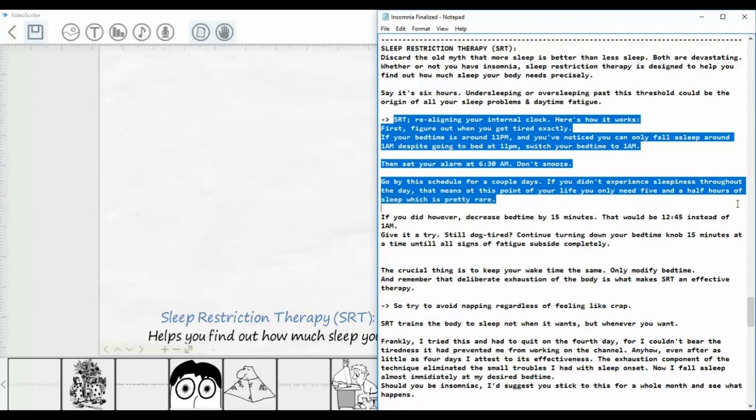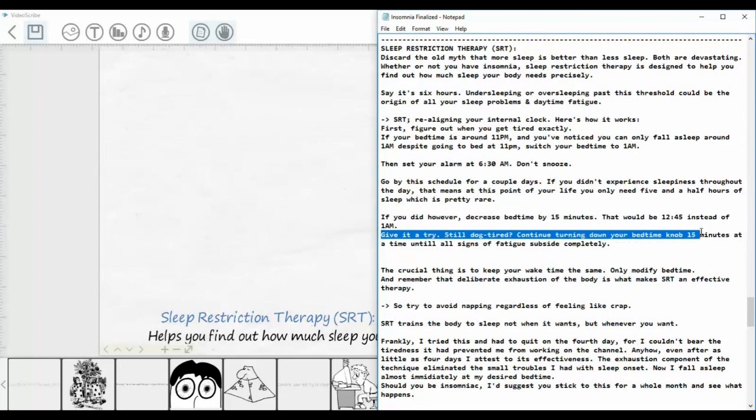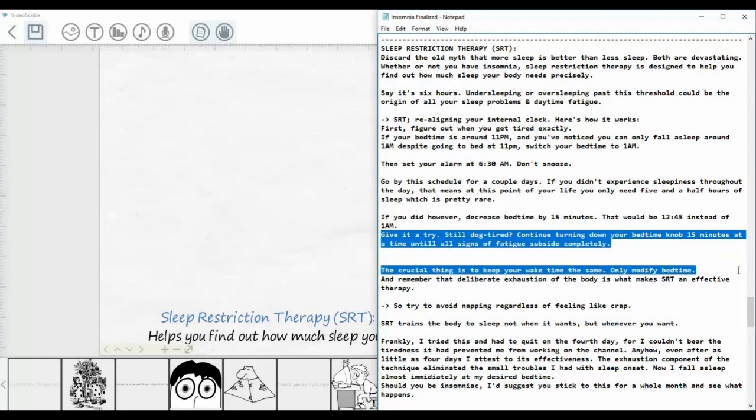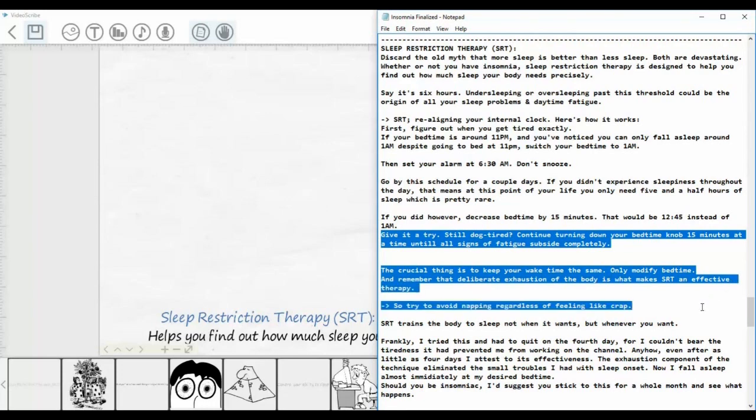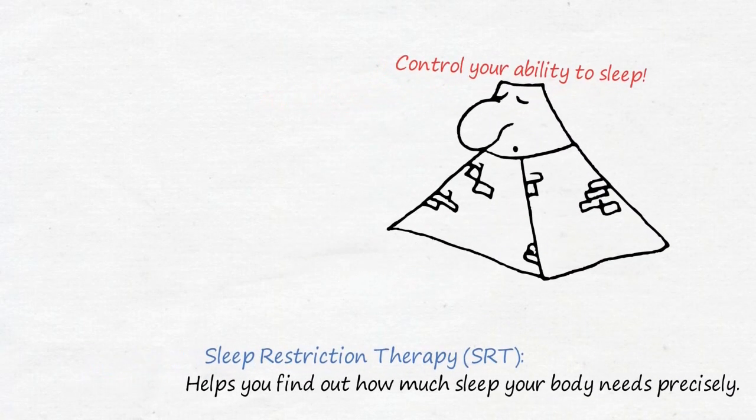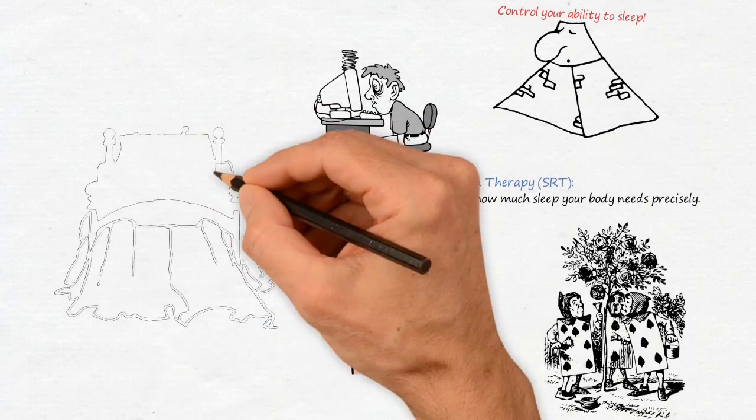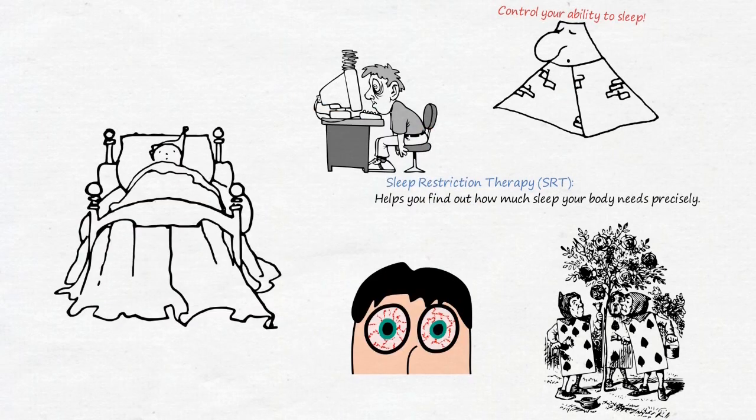Go by the schedule for a couple days. If you didn't experience sleepiness throughout the day, that means at this point in your life you only need five and a half hours of sleep, which is pretty rare. If you did however, decrease your bedtime by 15 minutes, that would be 12:45 instead of 1 am. Give it a try. Still dog tired? Continue turning down your bedtime knob 15 minutes at a time until all signs of fatigue subside completely. The crucial thing is to keep your wake time the same, only modify bedtime. And remember that deliberate exhaustion of the body is what makes SRT ineffective therapy, so try to avoid napping regardless of feeling like crap. SRT trains the body to sleep not when it wants but whenever you want. Frankly I tried this and had to quit on the fourth day for I couldn't bear the tiredness that had prevented me from working on the channel. Anyhow, even after as little as four days I attest to its effectiveness.